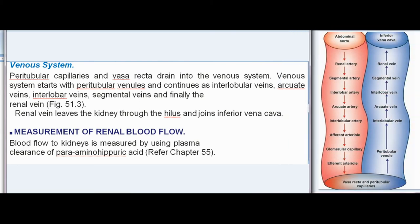Venous system: peritubular capillaries and vasa recta drain into the venous system. The venous system starts with peritubular venules and continues as interlobular veins, arcuate veins, interlobar veins, segmental veins, and finally the renal vein. The renal vein leaves the kidney through the hilus and joins the inferior vena cava.